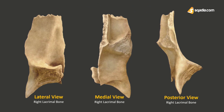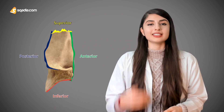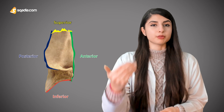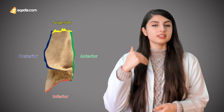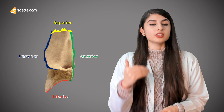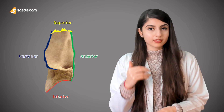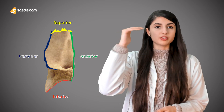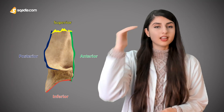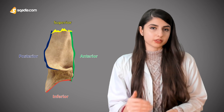Overall the medial surface of this bone is forming the medial wall of the orbit. So in overview, this is the lateral or orbital surface, and this is the medial or nasal surface of this bone. The four borders are: the anterior border on the front side of the body, the posterior border towards the nasal cavity, the superior border on the top side, and the inferior border on the bottom side.